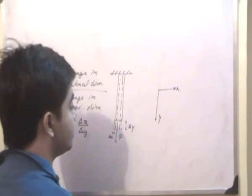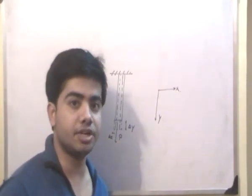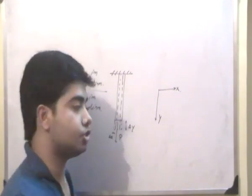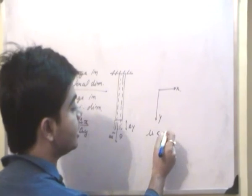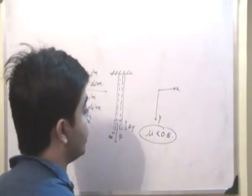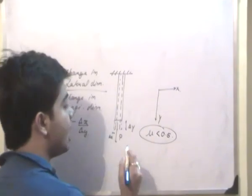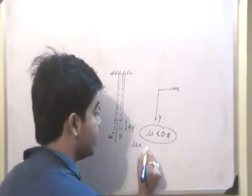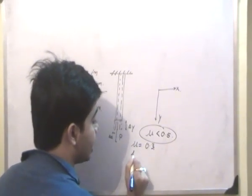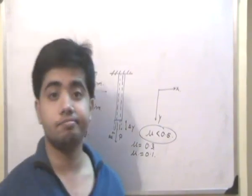One thing we have to understand is that Poisson's ratio should always be less than 0.5—μ should always be less than 0.5—and we will obtain this from the next lecture when we study the modulus of elasticity. Poisson's ratio for structural steel, which is very important for civil engineers, is 0.3, and for concrete, it is equal to 0.1. Thanks a lot for listening.